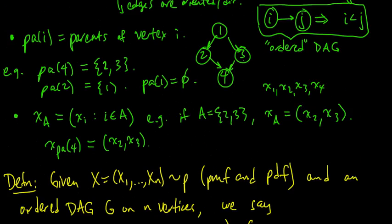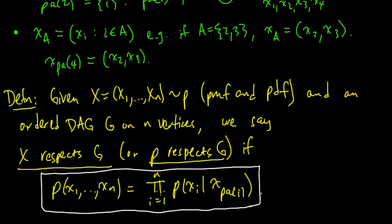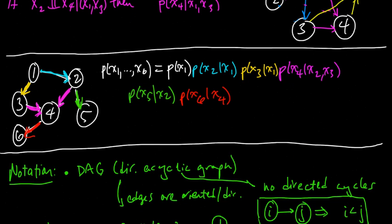So here, remember, so just to draw the connection, before, each of these factors, so each of these factors in this product corresponds to a factor in this product. Factors in this product, so let's see, so before, when we wrote down these factors, like for this one, x4 given x2 and x3, we had x4, and in the graph here, the way that we wrote down this distribution was we wrote it down, we wrote down this factor, x4 given x2 and x3, because 2 was a parent of 4, and 3 was a parent of 4.